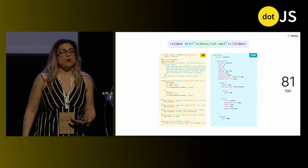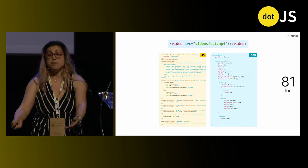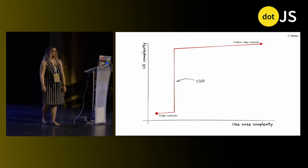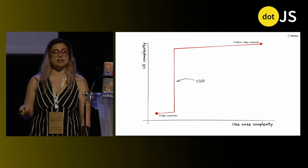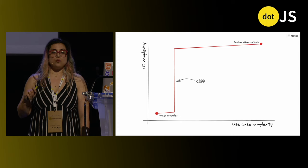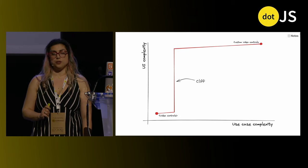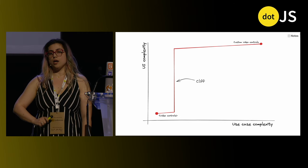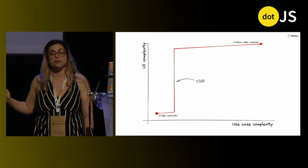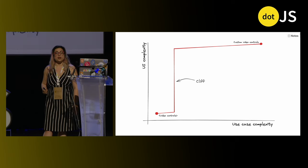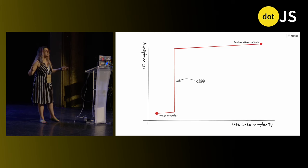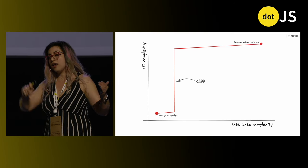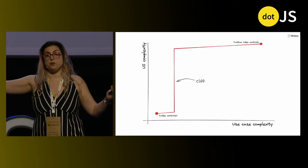So where would video be on our chart? Simple things are easy, complex things are possible, but how do we go from one to the other? Once use case complexity crosses a certain threshold, UI complexity abruptly shoots up — because that's the point where you have to reimplement everything yourself. This is called a usability cliff, and it's very common in UIs that try to make simple things easy and complex things possible by just doing it twice: one super high-level API optimized for common use cases, and another super low-level API where you can do whatever but have to reimplement it yourself.